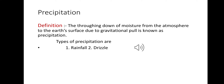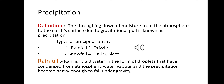What is rainfall? Rain is liquid water in the form of droplets that have condensed from atmospheric water vapor and the precipitation becomes heavy enough to fall under gravity.